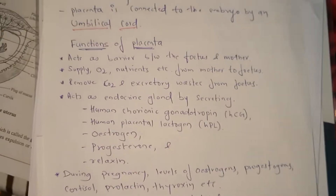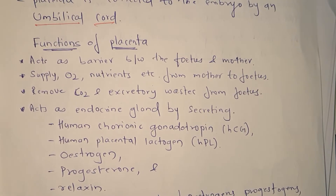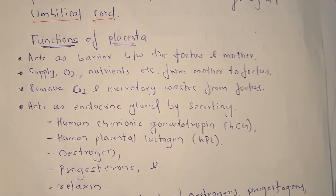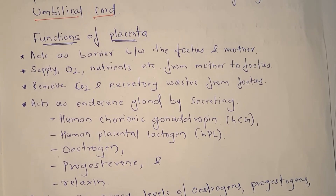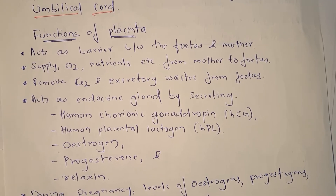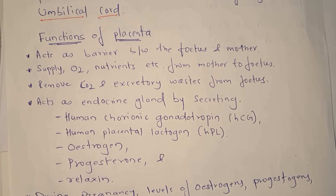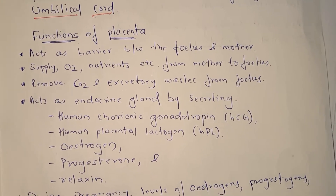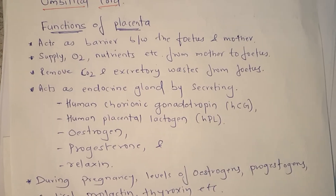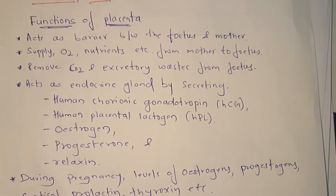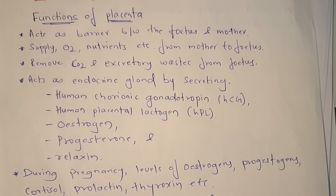For a three-mark exam question on functions of placenta, you can write: it acts as a barrier; it supplies oxygen and nutrition from mother to the fetus; it removes carbon dioxide and excretory waste from the developing fetus; and the placenta acts as an endocrine gland because it secretes these hormones. The hormones secreted by placenta may also be asked as a separate question.